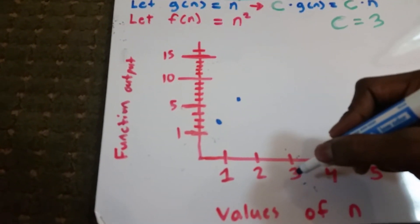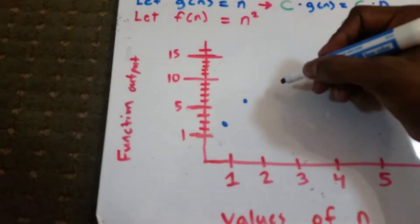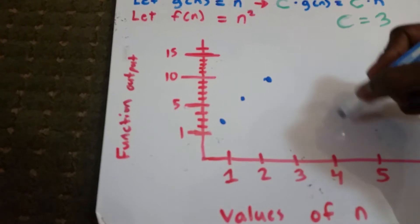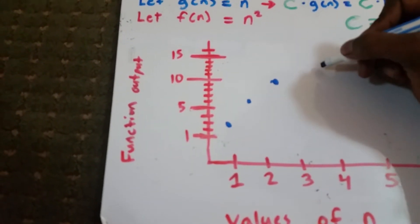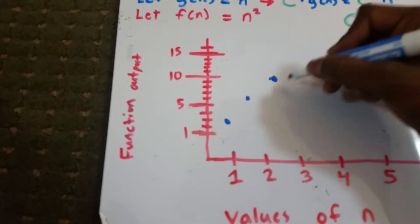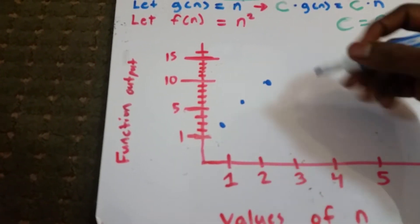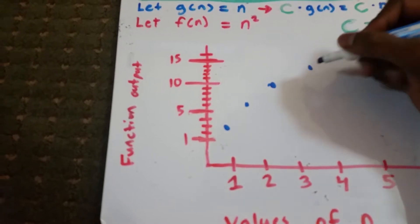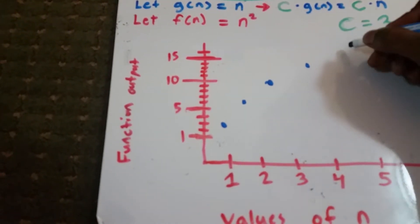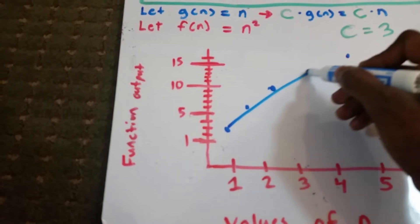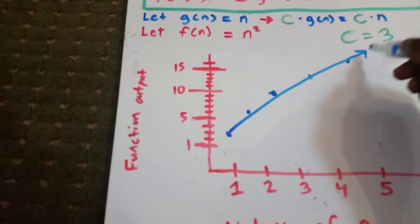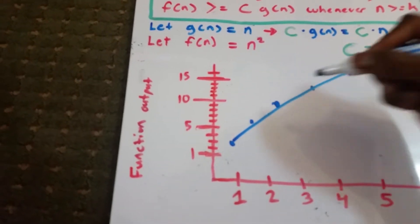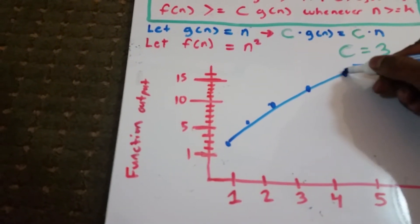3 times 3 is 9, so put a dot there. And 4 times 3 is 12, put a dot. Ooh, I did not do the intervals very well, so we have 12. And 5 times 3 is 15. So this is supposed to be a straight line and my intervals are not great, but you know where the points are.